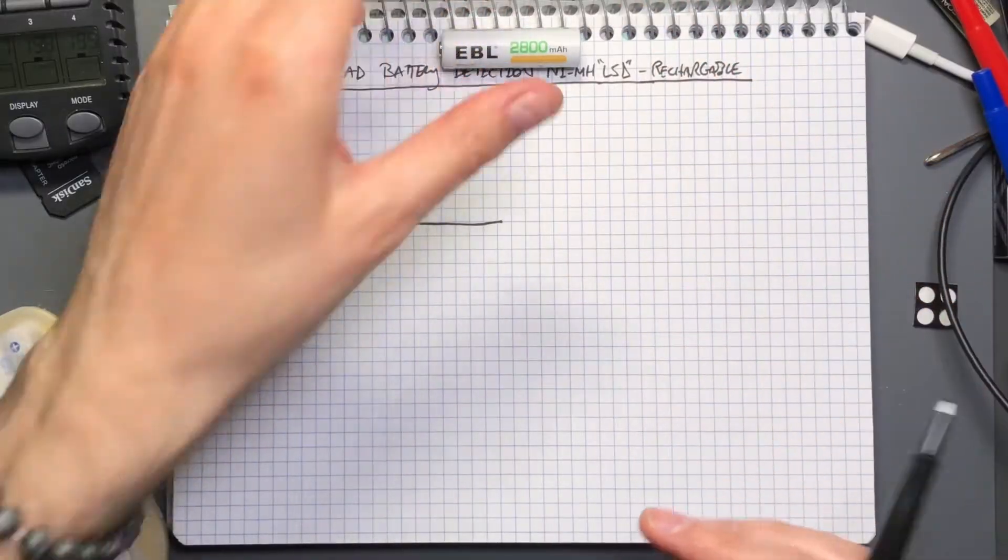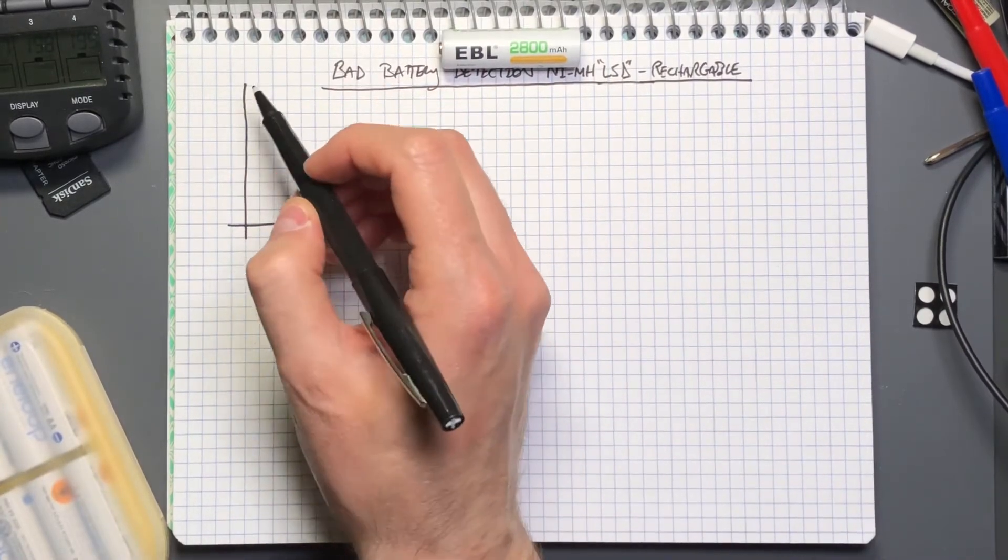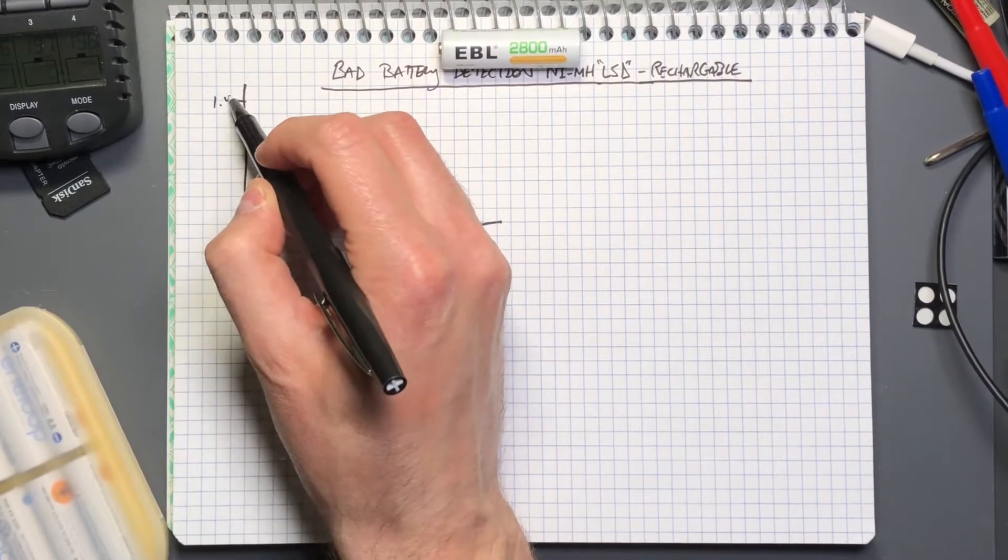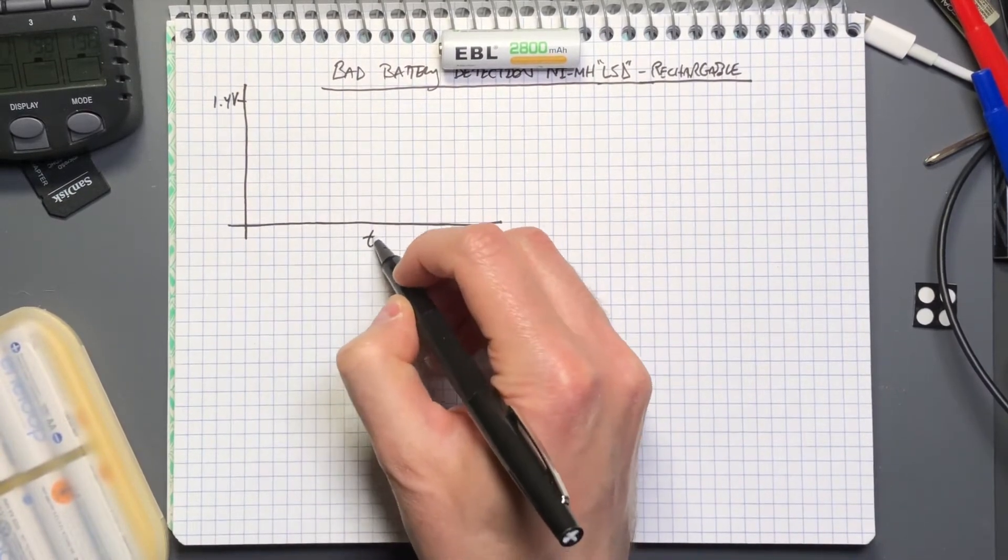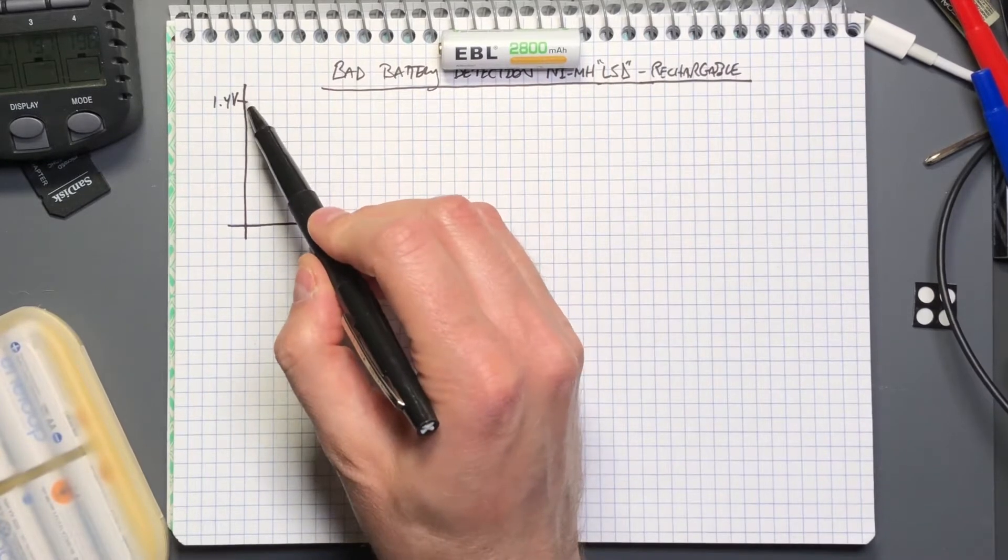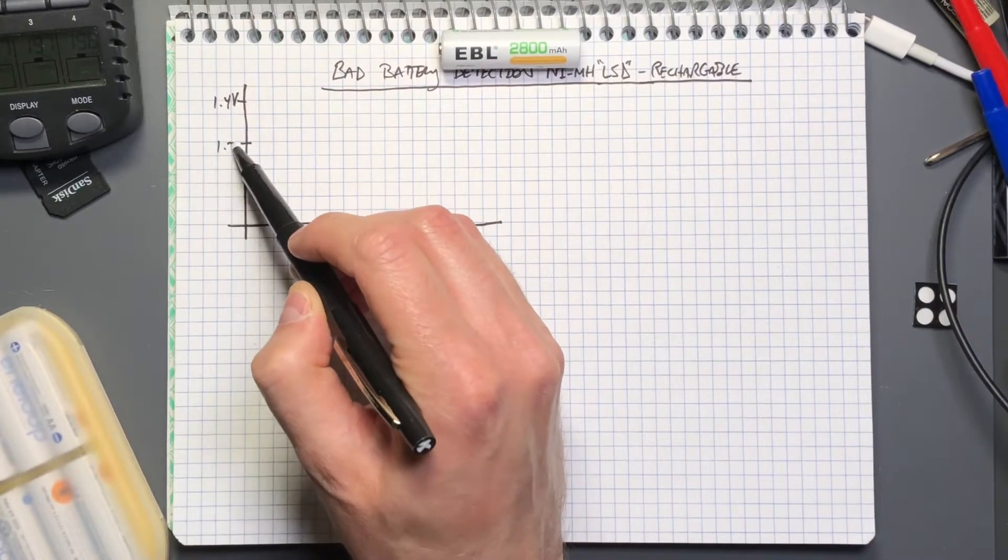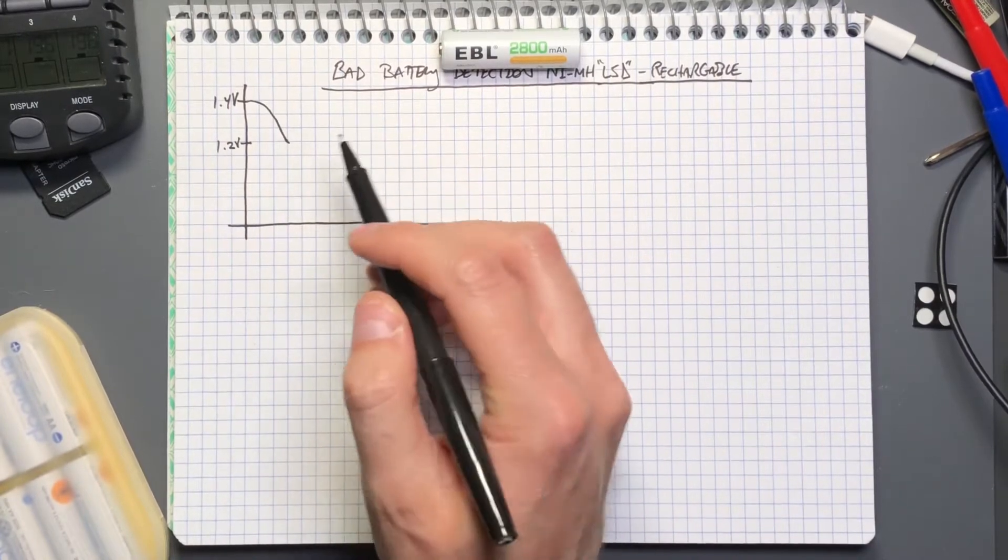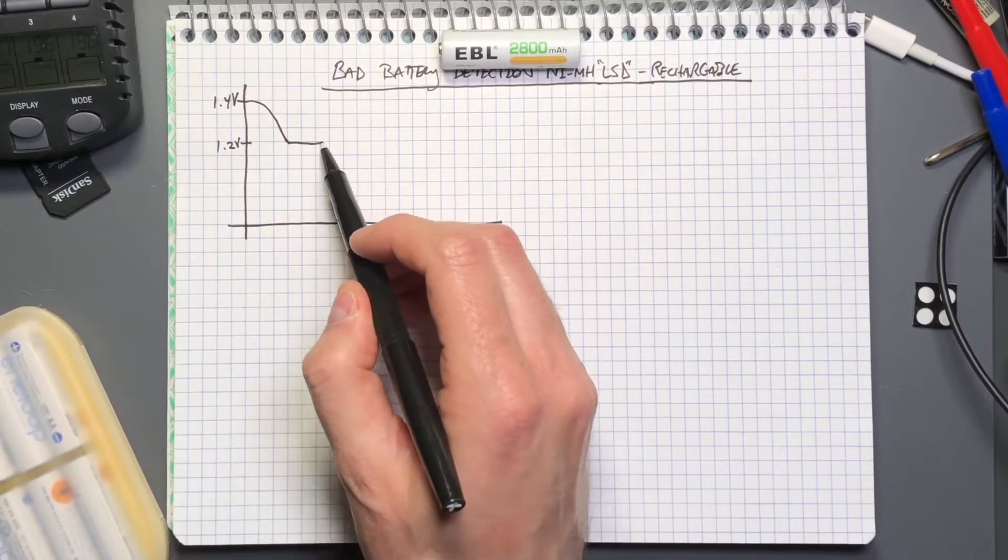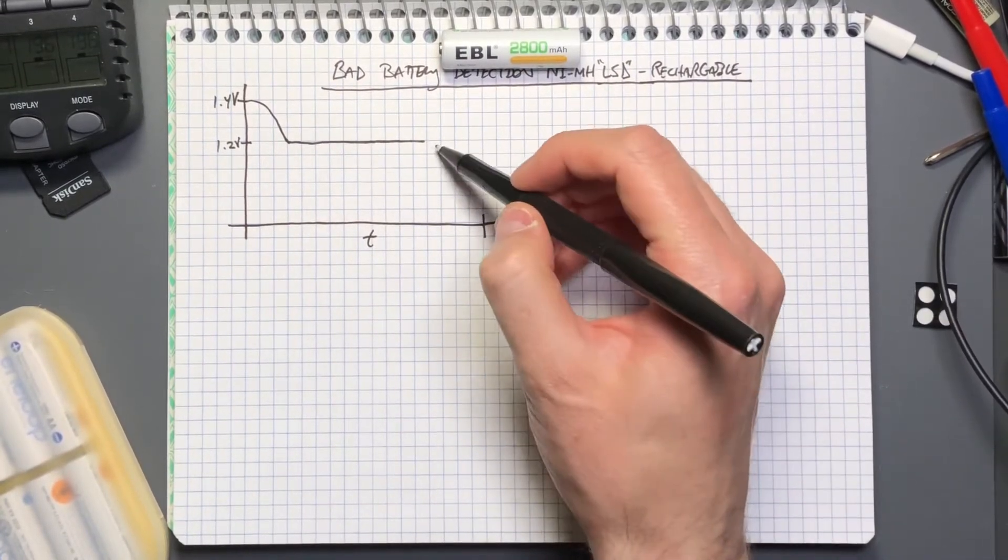During a battery's operation after it has been fully charged it might have some voltage around 1.4 volts and over time the voltage settles down to somewhere around 1.2 volts pretty quickly. It stays at about 1.2 volts until it's depleted.